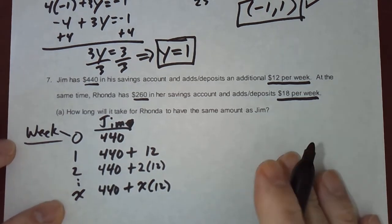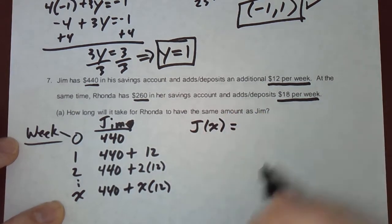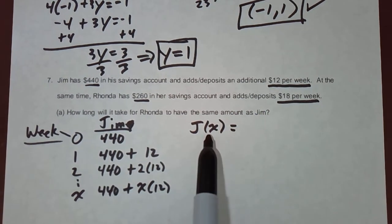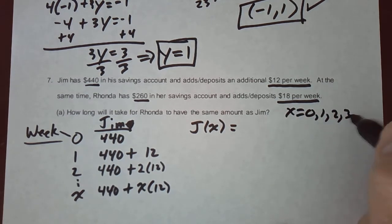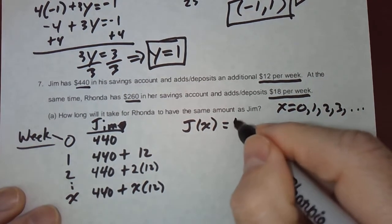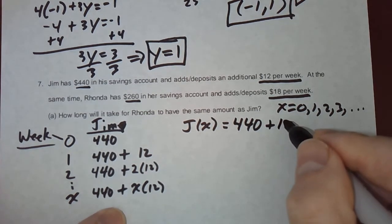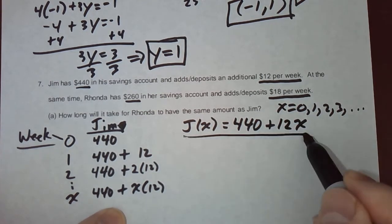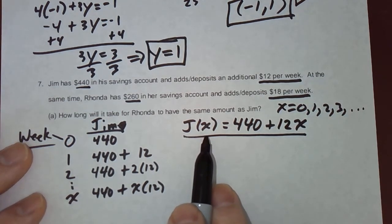So we could come up with a function. Maybe I call it J of X. J of X is going to be the number of dollars that Jim has in his account at week number X. So make a note. X goes 0, 1, 2, 3, dot, dot, dot. It's week numbers. Well, he'll have 440 plus I'll write it like 12X this time. This is the function that describes how much Jim has in his account at week number X.